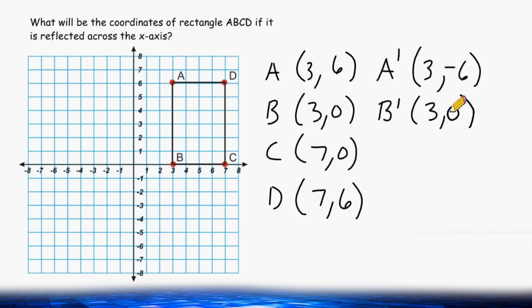And for C, the point is going to be (7, 0). And for D, the new location will be (7, -6).